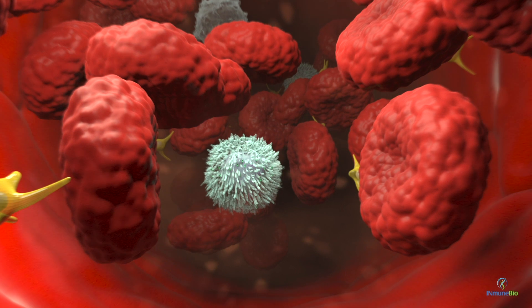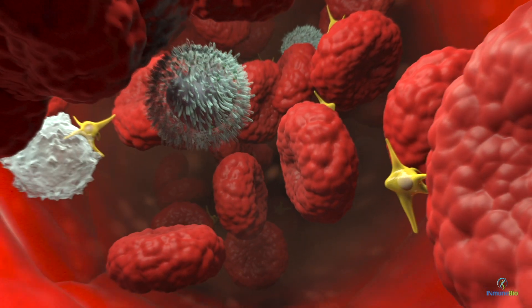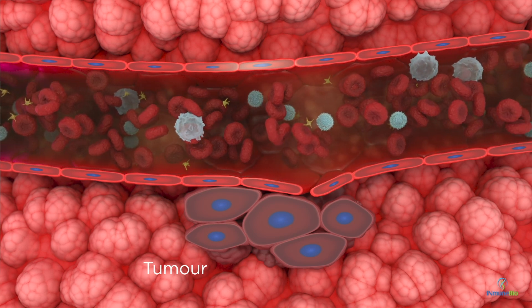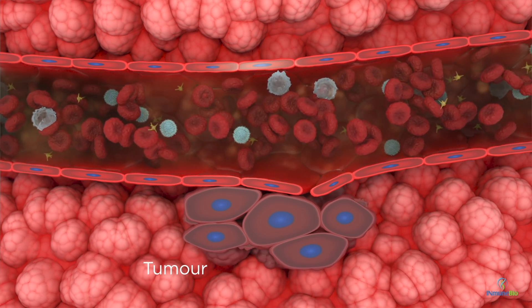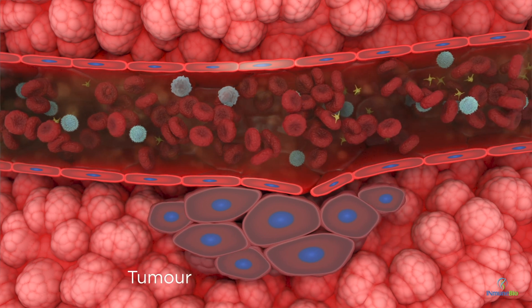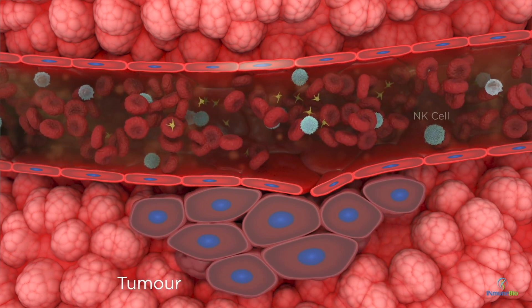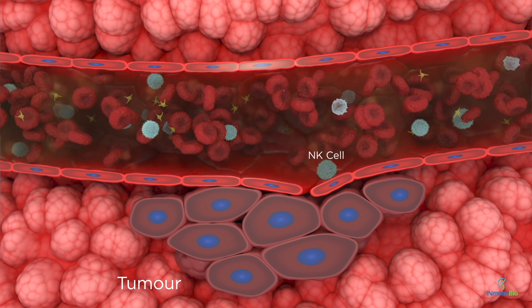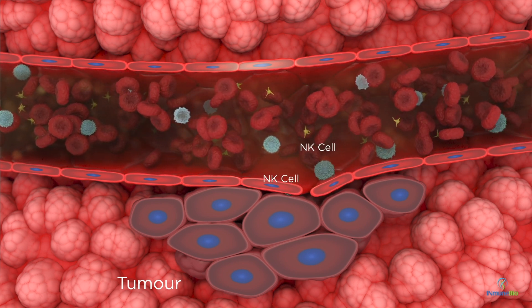NK cells constantly patrol our bodies to eradicate tumor cells as they arise and provide crosstalk to the adaptive immune system. Failure of an NK cell to recognize a tumor cell allows cancer to develop. Understanding tumor-specific NK cell responses is an important step towards maximizing the therapeutic potential of NK cells in cancer.